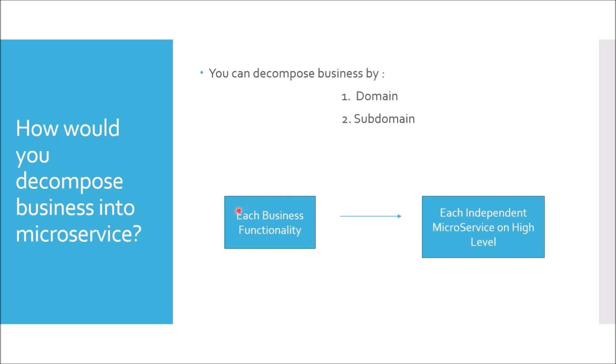How you decompose each business functionality depends on how you use domain and sub-domain. A very common example is an e-commerce site like Amazon or Walmart — you could have a view part for different items, a payment part, an order part, and a feedback part. Each of them is a complete independent business functionality; the payment part doesn't interfere with the view part, and the feedback part doesn't interfere with the others. So each is like a sub-domain to the whole e-commerce domain.